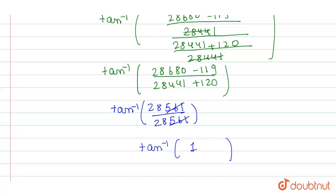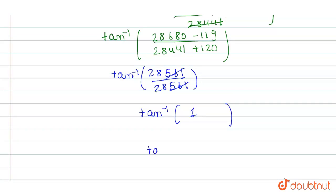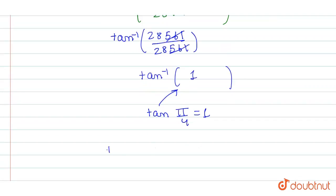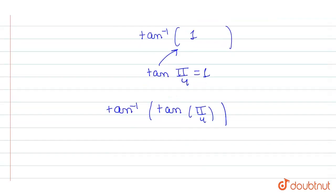We know that when we have 1 value, we can write tan of pi by 4 is equal to 1. Now, we will replace our value with here. It will become tan inverse of tan of pi by 4. Here, tan inverse tan cancel each other out. We get pi by 4. And this is equal to our RHS. Our equation has been proved. Hence, proved.